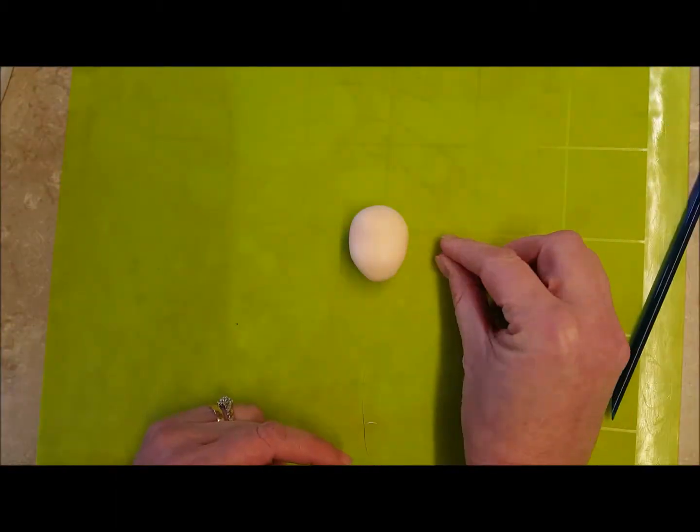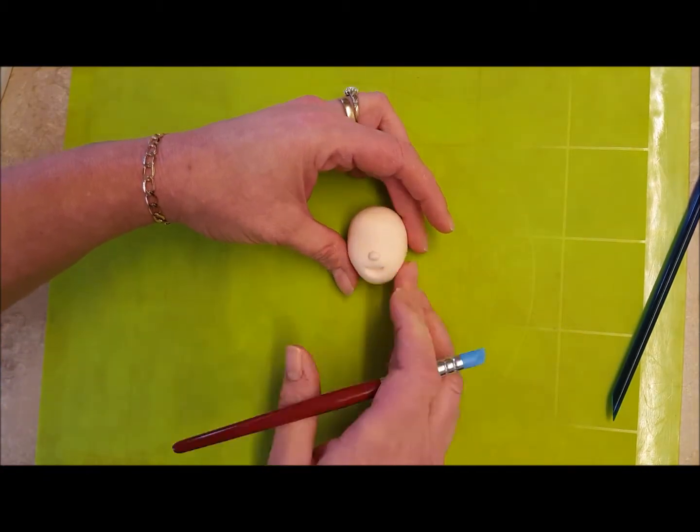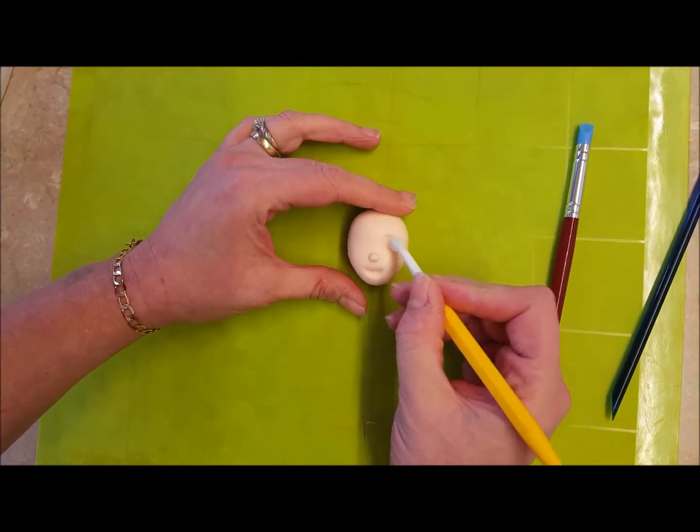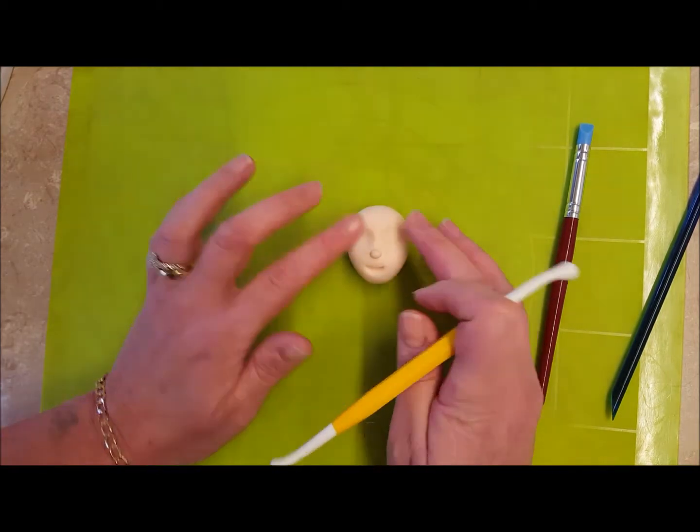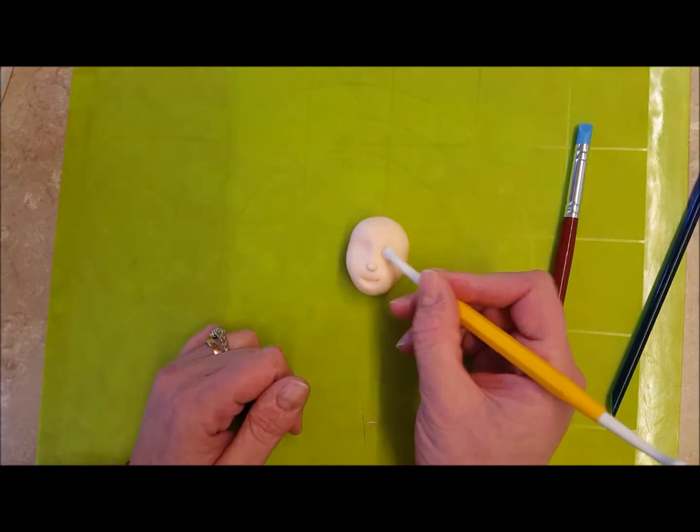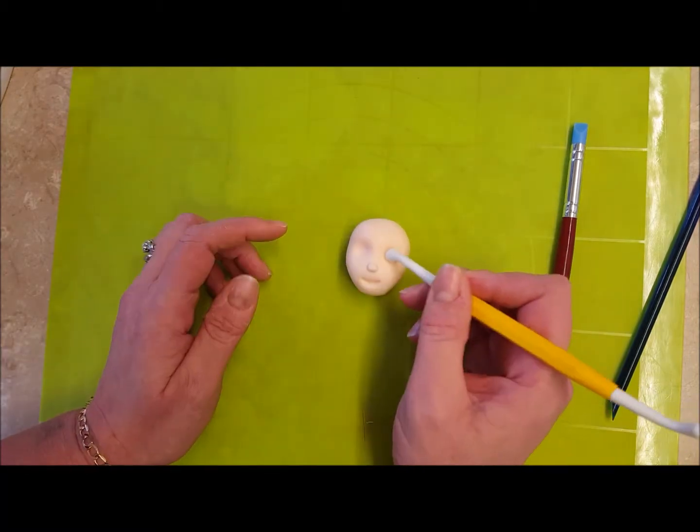This is for the nose, and I have my little tool here that makes the perfect smiling mouth. Add some eye sockets then smooth them out, then add another little dent for when you put the white in. Set that aside to dry overnight.